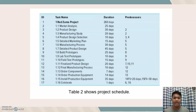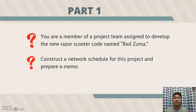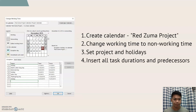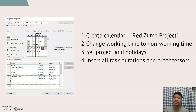The project begins on holidays, and this table shows the project schedule. We need to develop the new reserve scooter code-named Red Zuma and construct a network schedule for this project and prepare a memo. We need to create the calendar renamed to the Red Zuma project, change the working time, set project holidays, and insert all task durations and predecessors.